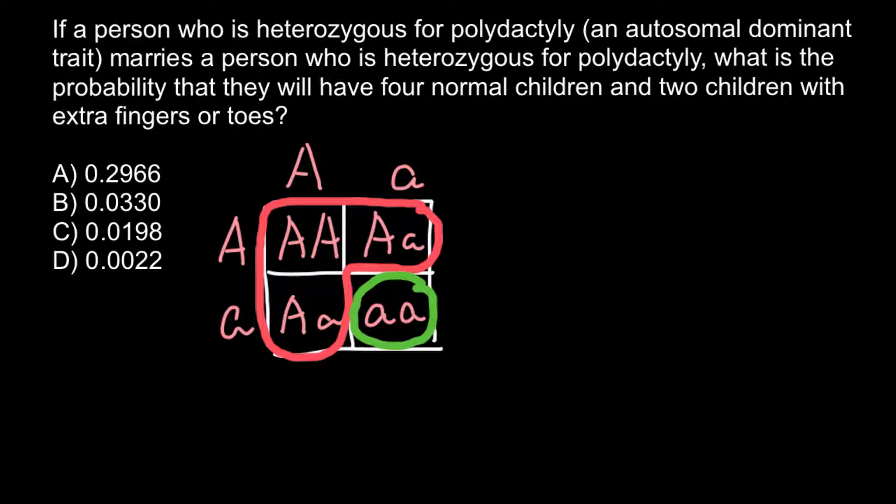According to our problem, the total number of children in this family should be six, and we are looking for the probability that four of them would be normal and two would have extra fingers. Because this is not an ordered sequence, we can have many different combinations — for example, the first child normal and second affected, or first two affected and then all normal. There are many possible arrangements.